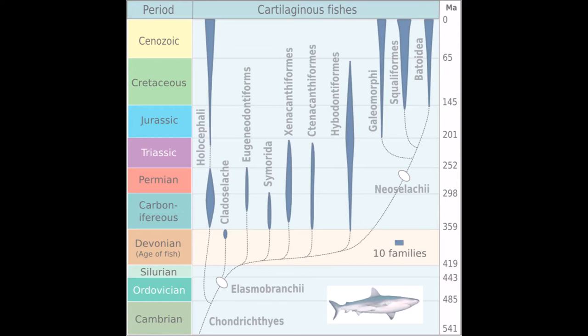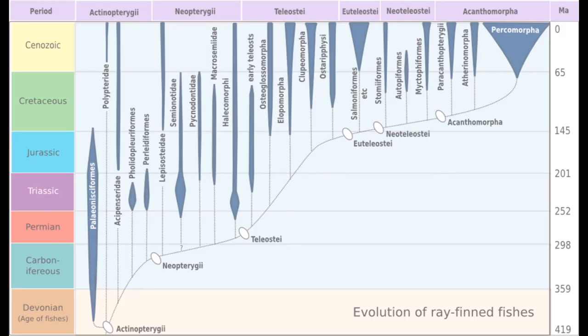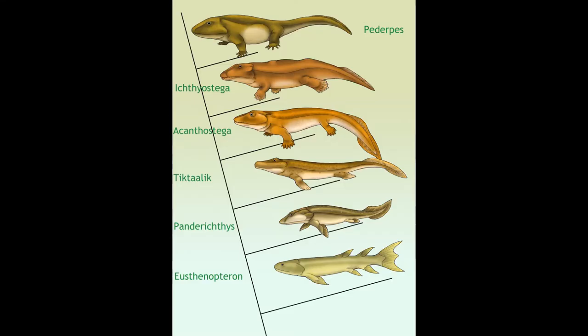Wherever you look, the entire phylogenetic tree consists altogether of missing links. The dotted lines show relations that are real and essential, but do not appear as fossils. What about the transition from fish to tetrapods? It proceeds from Eusthenopteron, which is clearly still a fish, to Pederpys, an evident tetrapod.